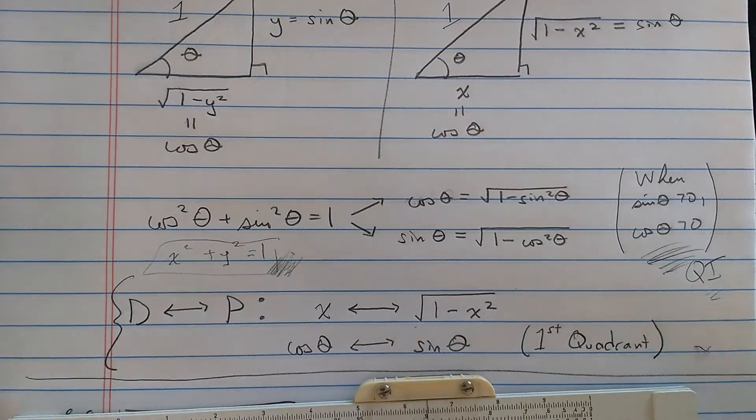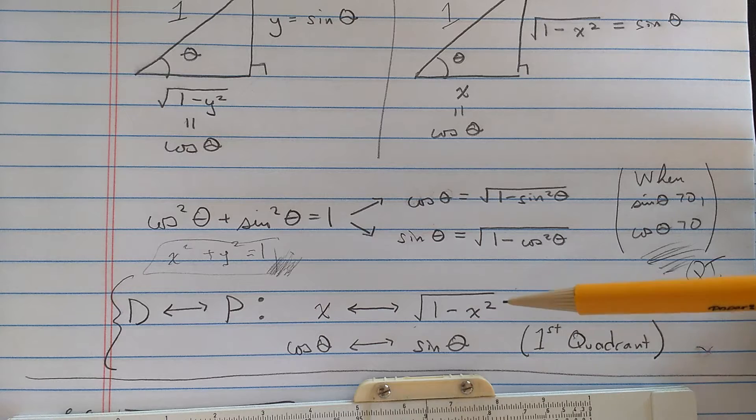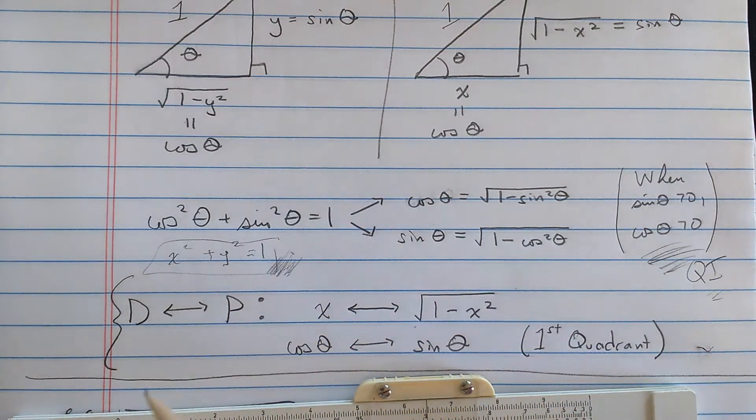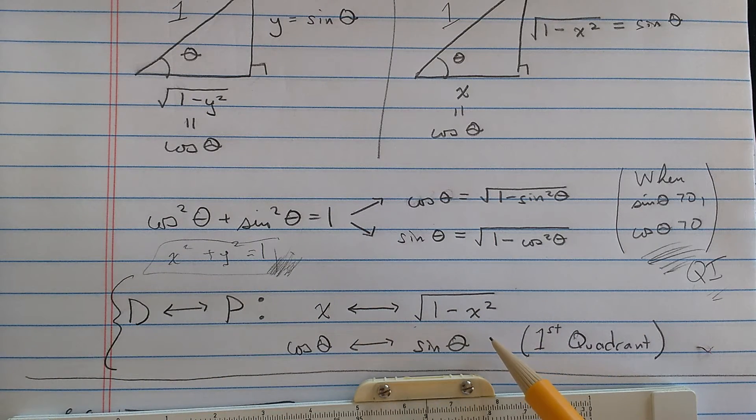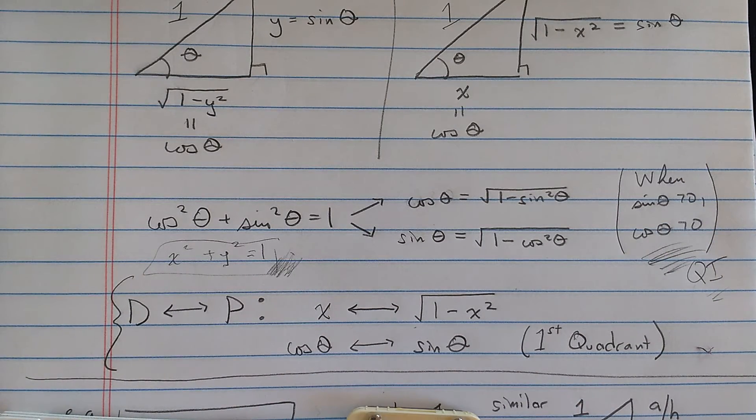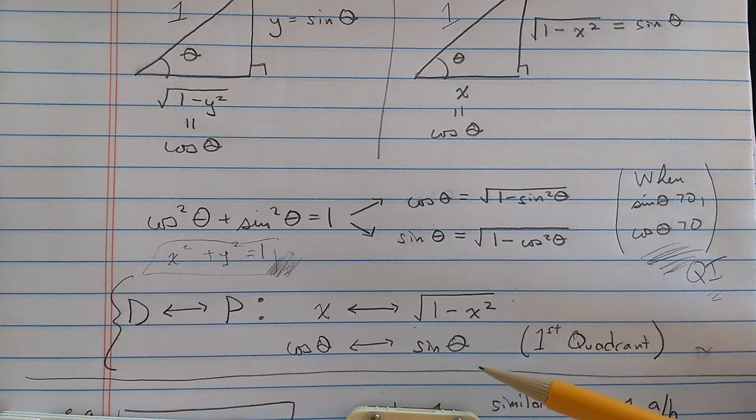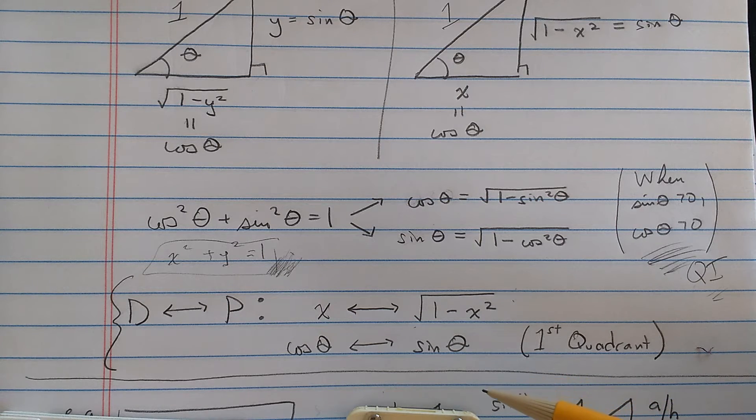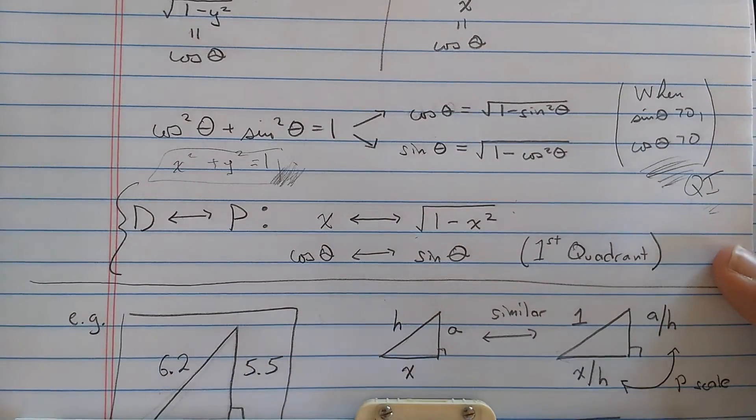So, what is this P scale? This P scale is a scale which computes with respect to D the function square root 1 minus x squared. Now, that function is its own inverse, so it doesn't matter whether you read D to P or P to D, so it computes square root 1 minus x squared. The fact that it reads backwards or forwards is very convenient for calculation. You can think of it as computing sine from cosine or cosine from sine, one of them being on the D scale. Of course, first quadrant angles.